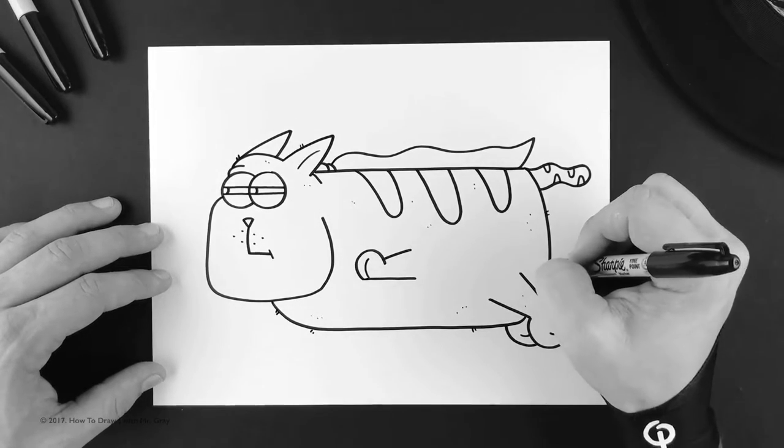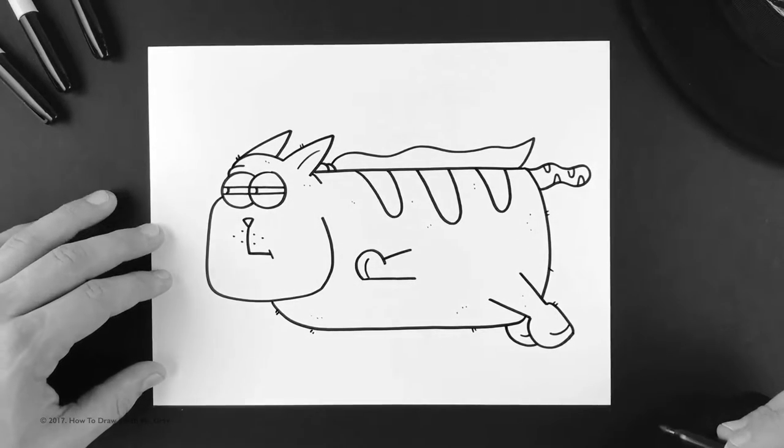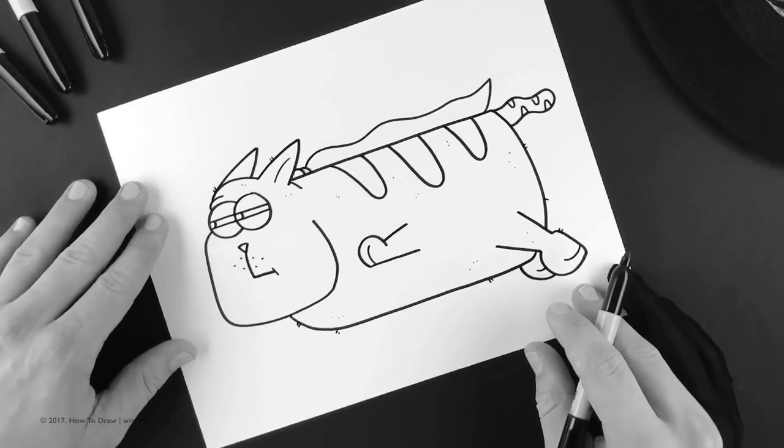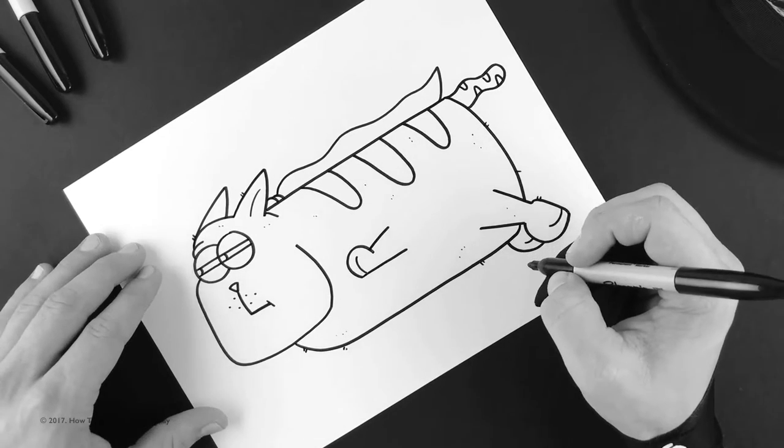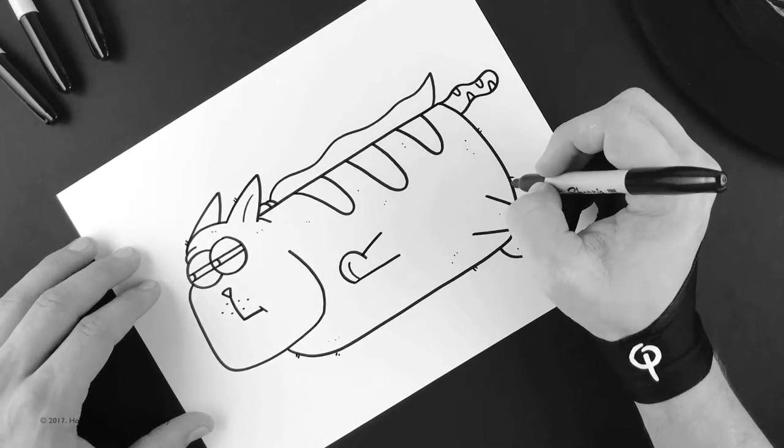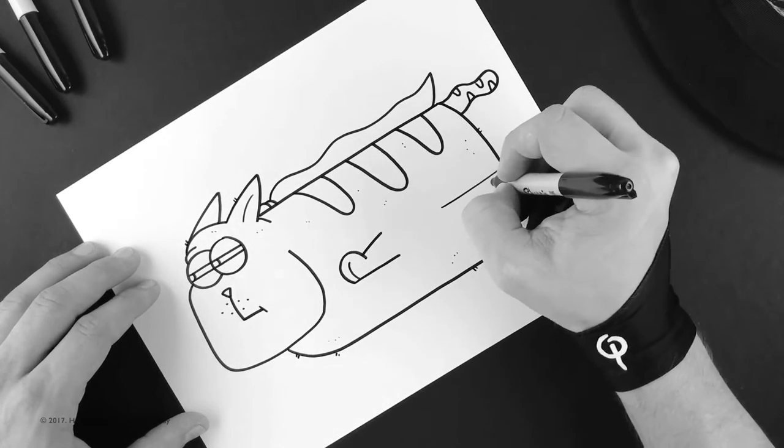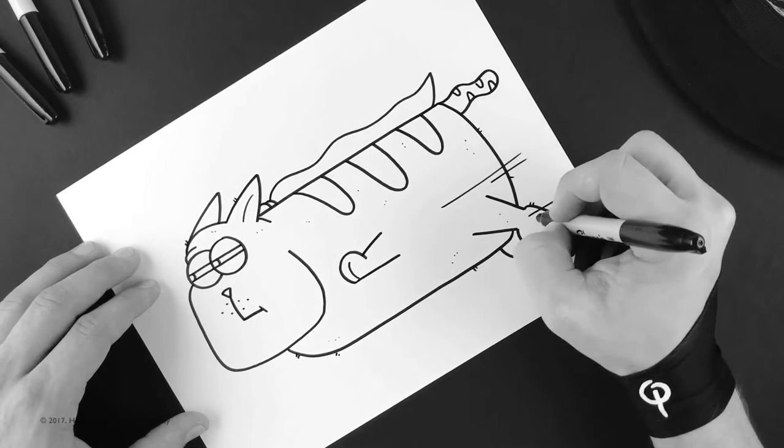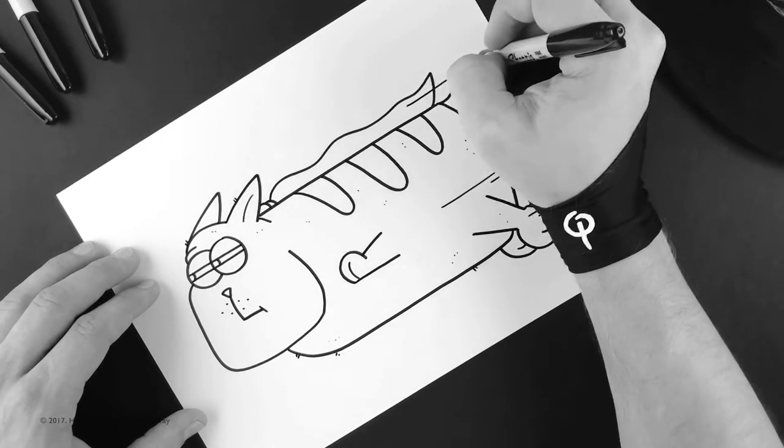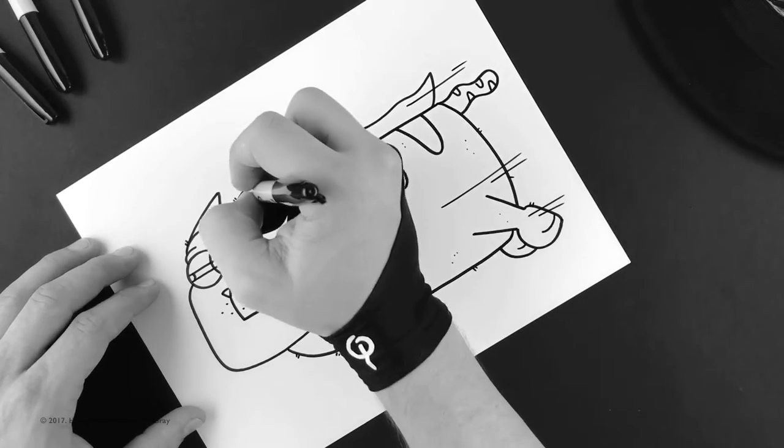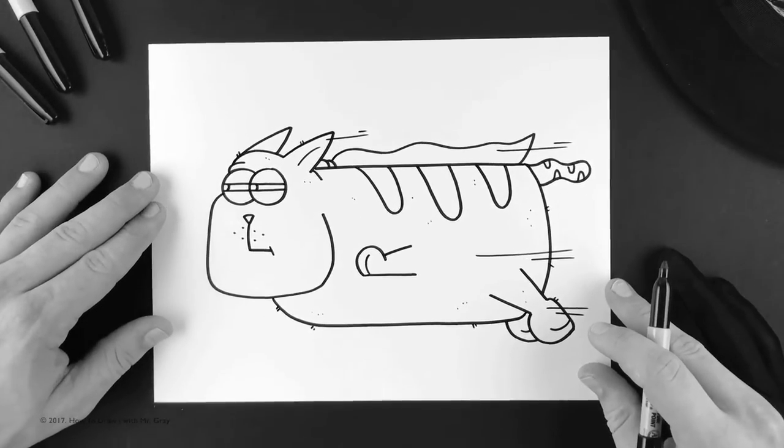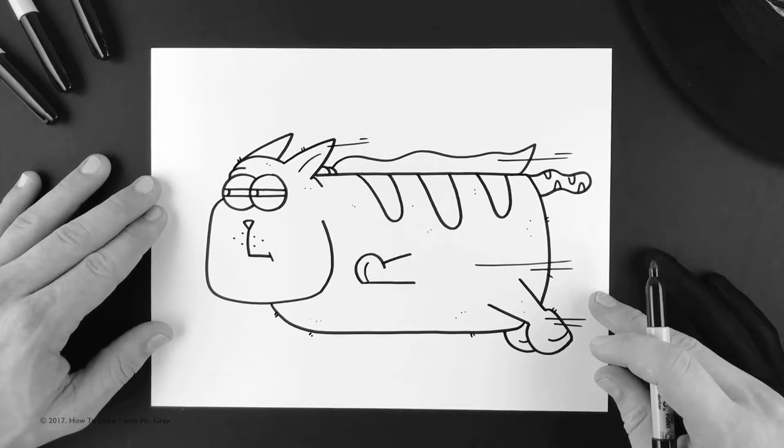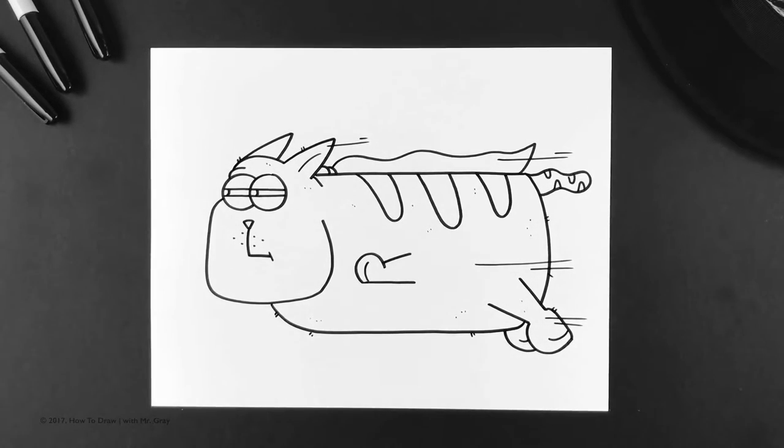And actually, before we finish, he is zipping through the air, so let's do some motion lines. So we're just going to do some straight lines coming off just like this. You don't want to overdo it—just enough that we can see super kitty is zipping through the air.